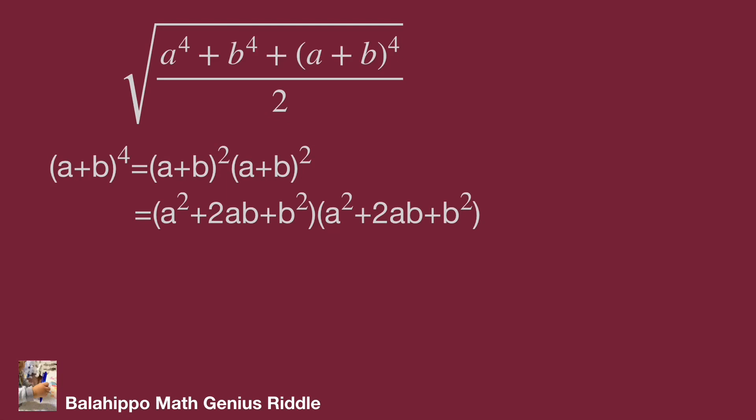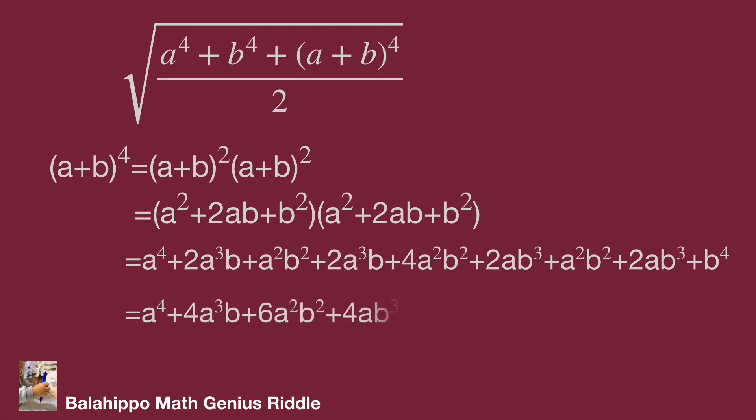Multiply each item. We have the new list as the video displays. Simplify these items: a^4 + 4a^3b + 6a^2b^2 + 4ab^3 + b^4.